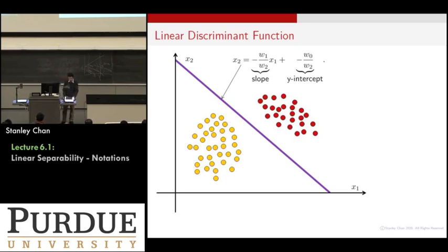So pictorially what you have is the following. You have these two groups of data points, and then you want to draw a line. This line will have this expression. The x-axis is x1, the y-axis is x2, and so you have x2 equals to a slope plus some y-intercept. OK? So that will give you the decision boundary.